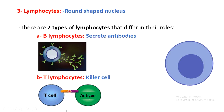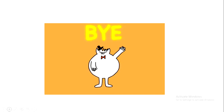So the immune cells are: monocytes, granulocytes, B lymphocytes, and T lymphocytes. This is all for today. I hope you enjoyed the video, and if you have any questions you can ask me. Goodbye.